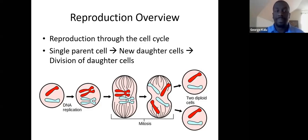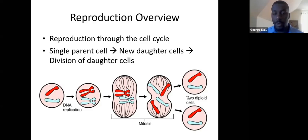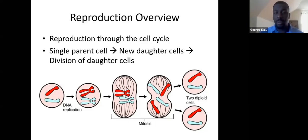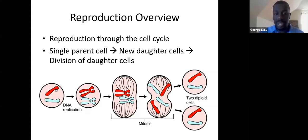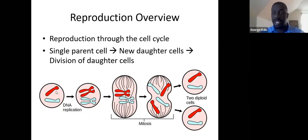We have two types of reproduction: producing offspring and repairing body cells. Regardless of which type, reproduction is going to happen through the cell cycle. We start with a single parent cell, and through this process we end up forming two new daughter cells. Once those daughter cells grow, they'll eventually be able to reproduce themselves as well.